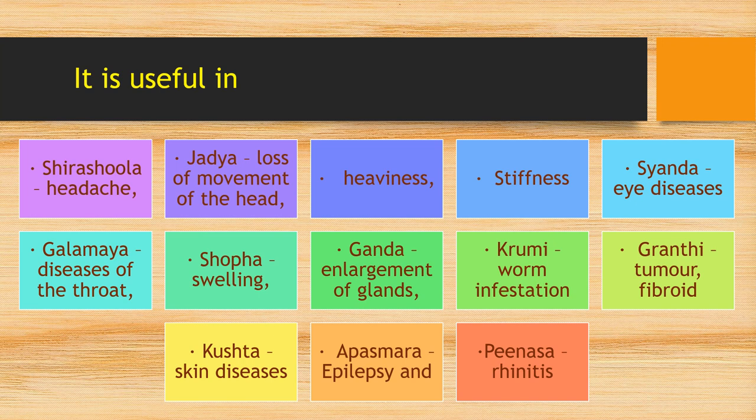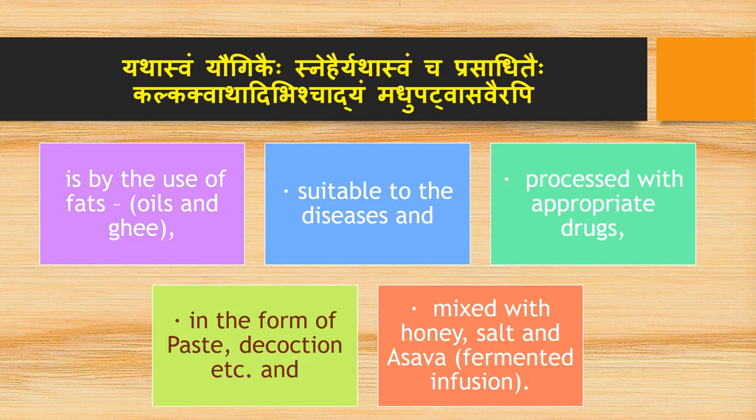Virajanam is also indicated in Shobha (swelling), Ganda (enlargement of gland), Kudumi (worm infestation), Grindi (tumor/fibroid), Kushta (skin diseases), Abasmara (epilepsy), and Peenasa (rhinitis). It is administered using fats, oil, and ghee suitable to the diseases, processed with appropriate drugs in the form of paste, decoction, etc.